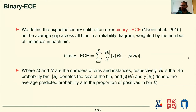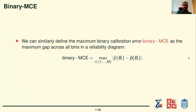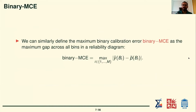We also have the maximum binary calibration error (MCE), which is simply the largest gap in the reliability diagram. If you have five bins, you look at the bin with the largest gap — that is your maximum calibration error. Notice this does not necessarily correspond to the largest bin in number of instances.